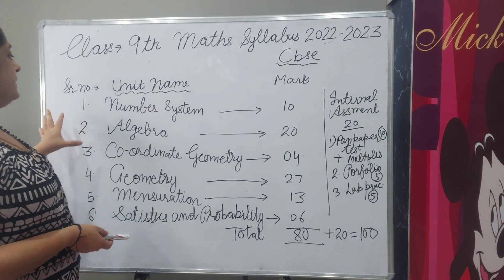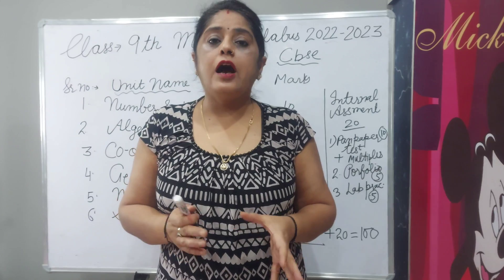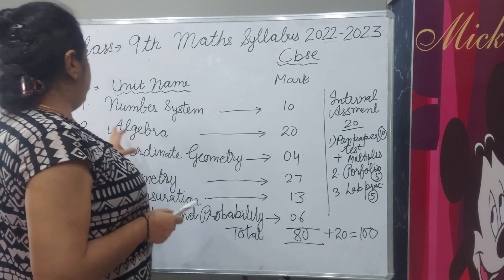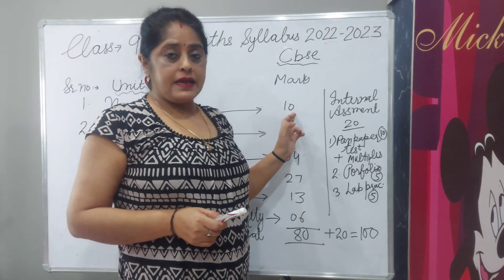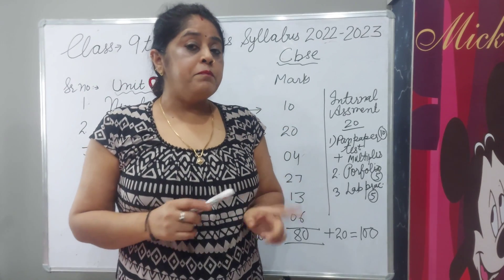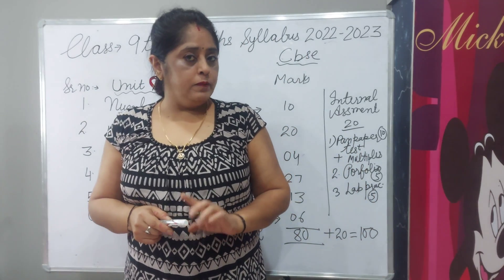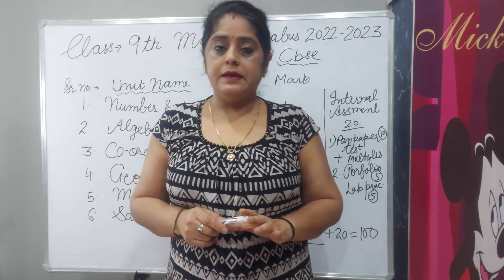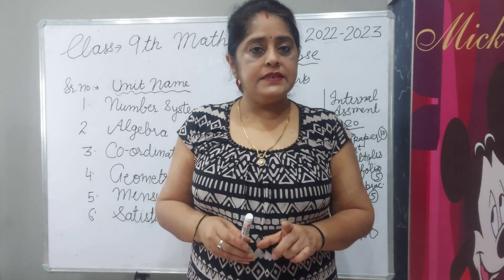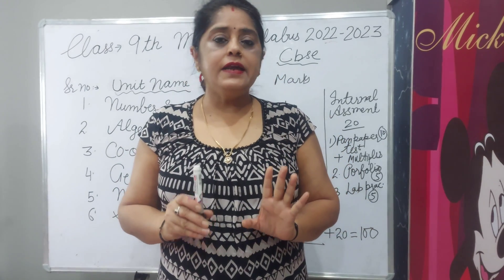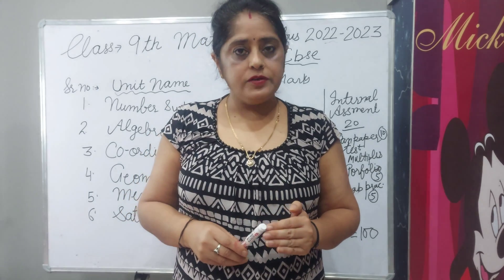In class 9th, first of all I am telling you unit-wise how many marks. First unit is number system and the paper will be 10 marks. Previously there was term 1 and term 2 with separate papers. But now this year, CBSE board has decided only one time they will take the paper of the whole syllabus.